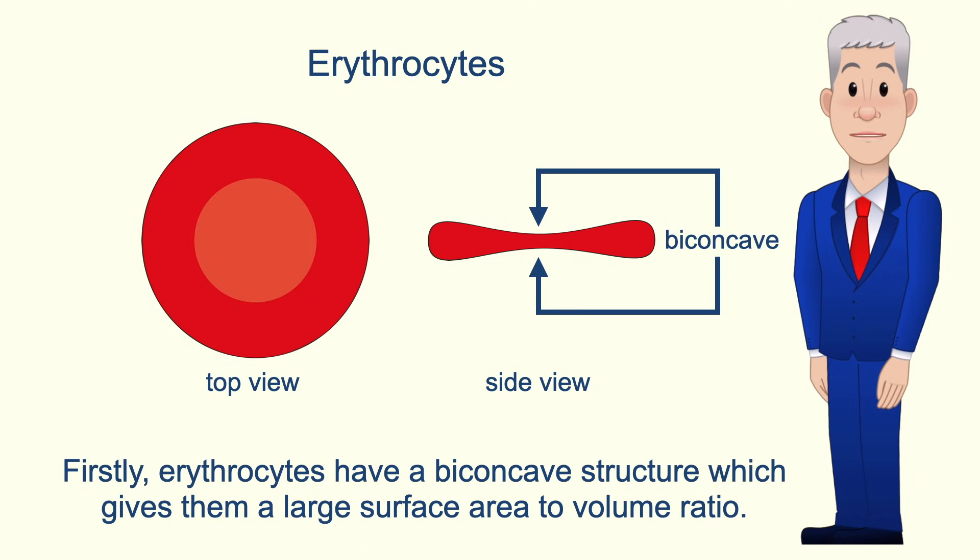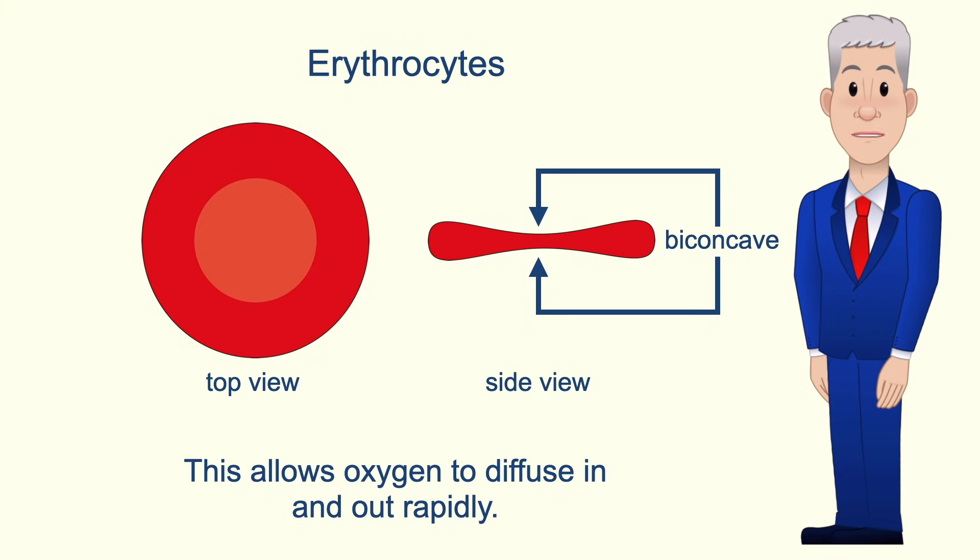Firstly, erythrocytes have a biconcave structure which gives them a large surface area to volume ratio. This allows oxygen to diffuse in and out rapidly.